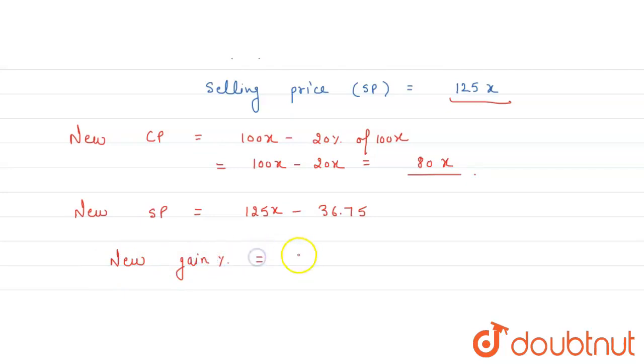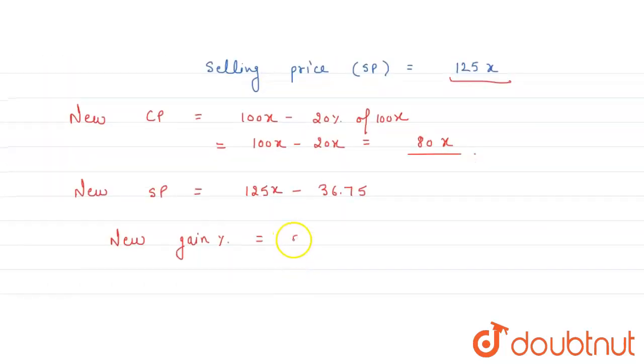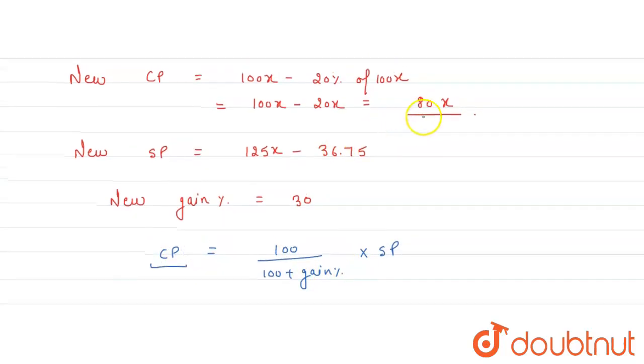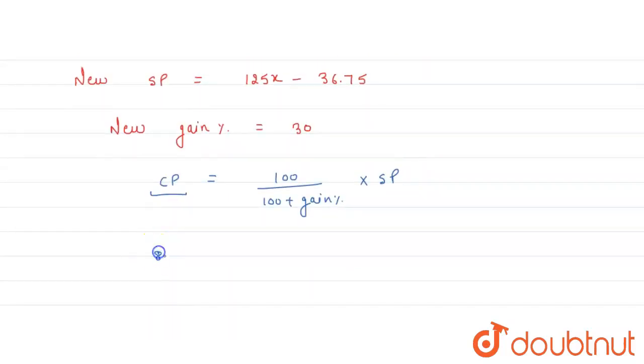Now use the formula: CP is equal to 100 upon 100 plus gain percentage, multiplied by SP. Now substitute all the values into this formula. So 80x is equal to 100 upon 100 plus 30, multiplied by SP.